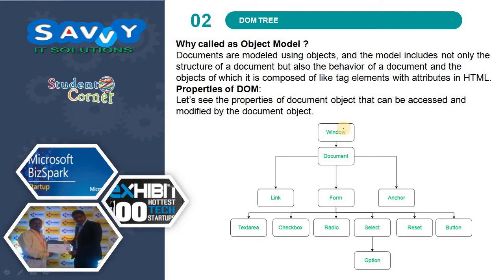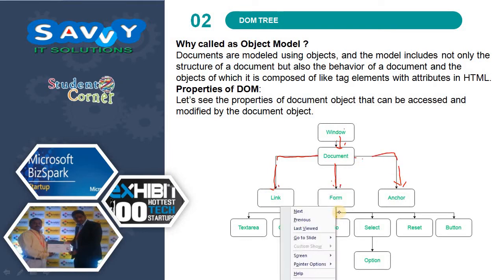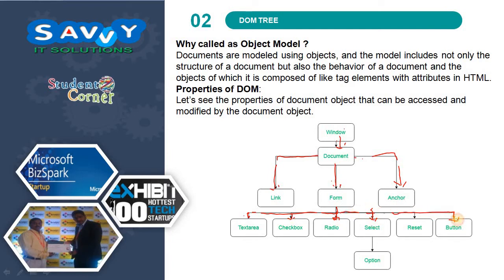In the DOM properties, windows are followed by documents. Documents are classified into three things: link, form, and anchor tag. Forms are further classified into text area, check boxes, radio button, select button, buttons, and reset. The select element has options. These are all the different tags available — link is one tag, form is one tag, anchor is one tag, text area is one tag, checkbox, and so on. These are the different things we will learn in later sessions.